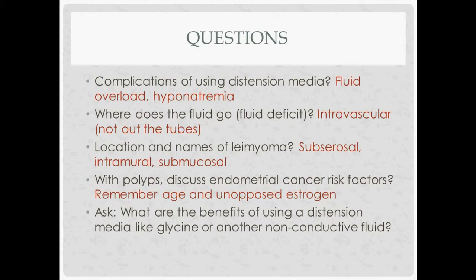Some likely exam questions: you can be asked about issues with distension media — mention fluid overload and hyponatremia, and discuss the two types: electrolyte-rich and electrolyte-poor. Complications tend to be more common with electrolyte-poor media like glycine. Regarding where the fluid deficit goes — most of it actually gets pushed intravascularly rather than out the fallopian tubes into the peritoneum. You can also be quizzed on leiomyoma locations: from outside to inside, subserosal, intramural, submucosal. For polyps, know the endometrial cancer risk factors: age and unopposed estrogen.